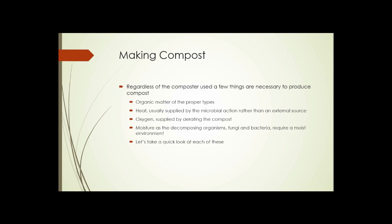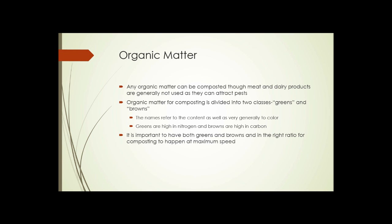Let's take a quick look at each of these. Anything that's organic can be composted. Though usually meat and dairy products are generally not composted because they can attract pests. It's possible to do it, it's just that it can cause some odor and attract pests. So usually when we're talking about composting, we're talking about plant material as the organic matter.